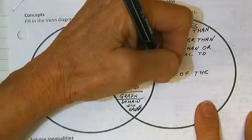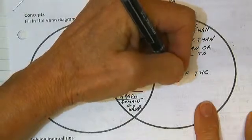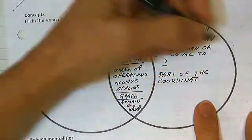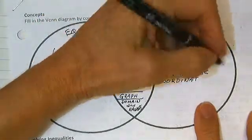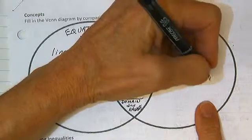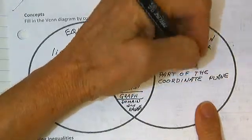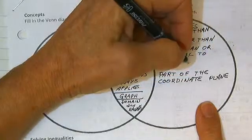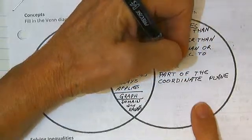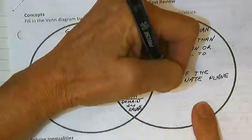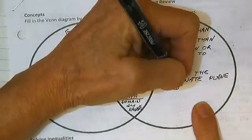And of course, the coordinate plane is that XY axis thing that we used to use to plot points. And we use shading or coloring to graph an inequality.